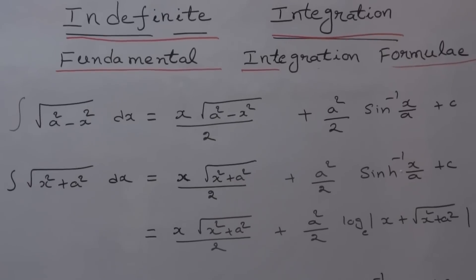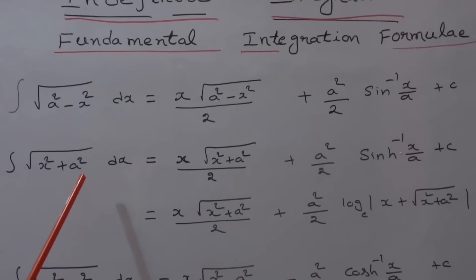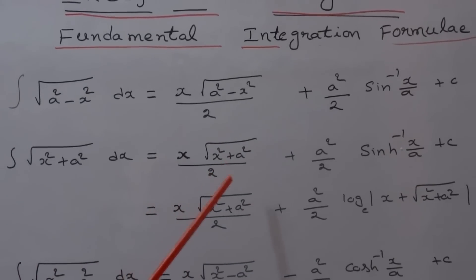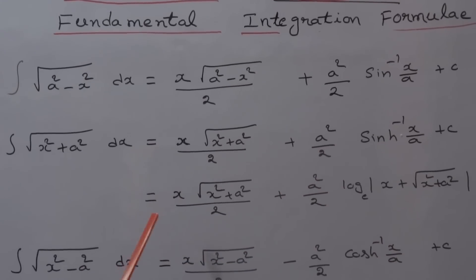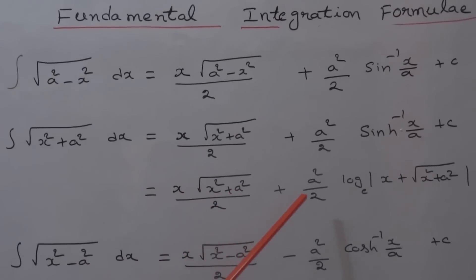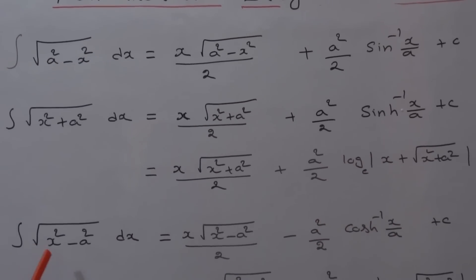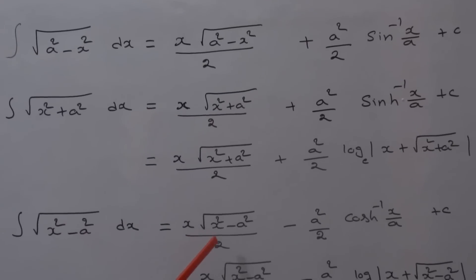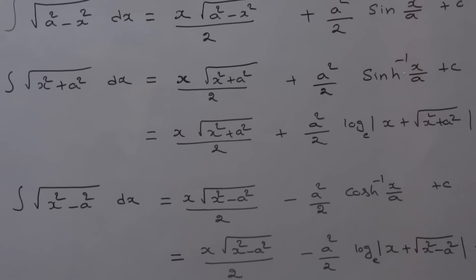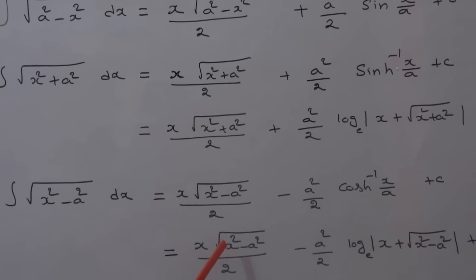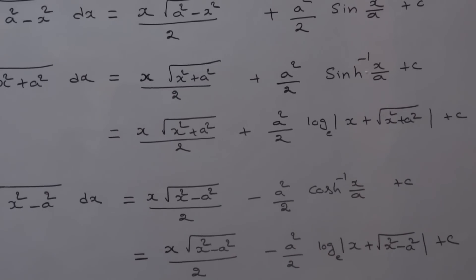Integral of √(a² - x²) dx is equal to (x/2)√(a² - x²) + (a²/2) sin⁻¹(x/a) plus c. Integral of √(x² + a²) dx is equal to (x/2)√(x² + a²) + (a²/2) sinh⁻¹(x/a) plus c, or (x/2)√(x² + a²) + (a²/2) log of |x + √(x² + a²)| plus c. Integral of √(x² - a²) dx is equal to (x/2)√(x² - a²) - (a²/2) cosh⁻¹(x/a) plus c, or (x/2)√(x² - a²) - (a²/2) log of |x + √(x² - a²)| plus c.